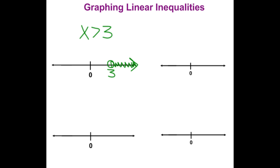Another way to show it is to use a parenthesis. So again, we'd have our 3, and instead of putting an open circle, we could put a parenthesis, which has the same meaning, strictly greater than but not including, and then shading to the right.